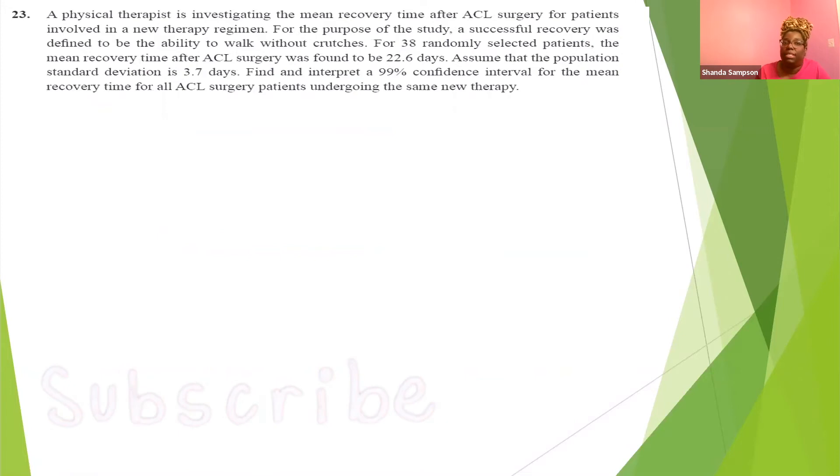A physical therapist is investigating the mean recovery time after ACL surgery for patients involved in a new therapy regimen. A successful recovery was defined to be the ability to walk without crutches. None of that means anything to us. Many of you get caught up on a word. For 38 randomly selected patients, n equals 38. The mean recovery time after that, for those randomly selected patients, that's why it's a sample, gives them a sample mean of 22.6. Assume that the population standard deviation is 3.7 days.